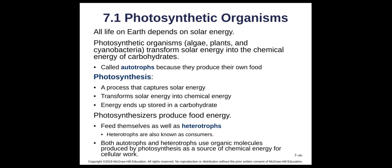Photosynthesizers produce food energy that feeds themselves as well as heterotrophs — also known as consumers — those things that eat plants or eat organisms that eat plants. Both autotrophs and heterotrophs use organic molecules made in photosynthesis as a source of chemical energy to make ATP and do work in a cell. At its very basis, photosynthesis is a chemical process that captures energy from the sun, turns it into chemical energy, and makes it available to other organisms.